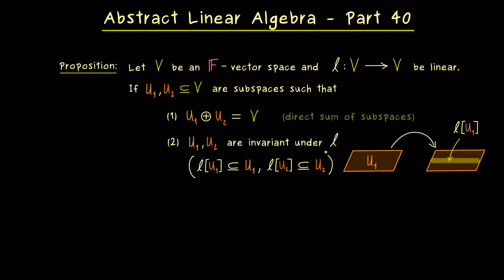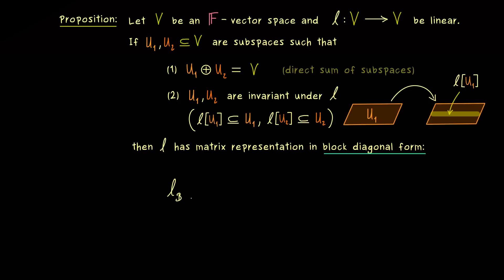Then we have a matrix representation of L in block form. More concretely, we find a basis B of V such that the corresponding matrix representation is a 2×2 block matrix in diagonal form. We can even say how large the blocks are, though they don't have to have the same size. Outside the diagonal blocks we only have zeros. The sizes of the blocks are given by the dimensions of the subspaces: the first square has dimension of U1 times dimension of U1, and the other is dimension of U2 times dimension of U2.